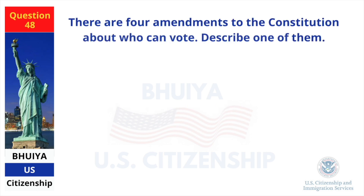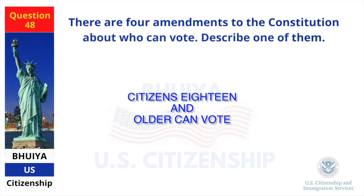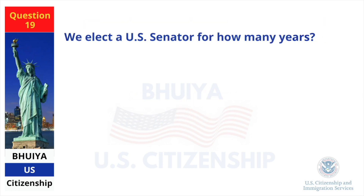There are four amendments to the Constitution about who can vote. Describe one of them. Citizens 18 and older can vote. We elect a US senator for how many years? Six.